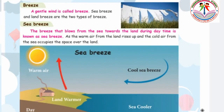First, breeze — a smooth or gentle wind is called a breeze. There are two different types of breeze: sea breeze and land breeze. Sea breeze means the breeze that blows from the sea towards the land during daytime — that is called sea breeze.